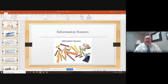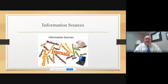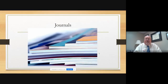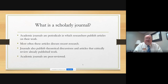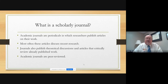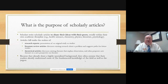Next we're going to switch gears and talk about information sources that are available to you. The first one we're going to look at are journals, and they're different than magazines. A journal is scholarly. Academic journals are periodicals, which means they come out on a regular basis — usually monthly, sometimes bimonthly or even weekly — in which researchers publish articles on their work. Most often these articles discuss recent research. Journals also publish theoretical discussions and articles that are critically reviewed. Academic journals are peer-reviewed, which we'll talk about in just a second.